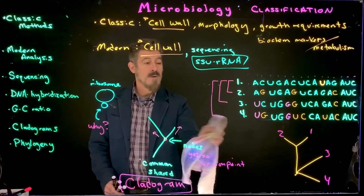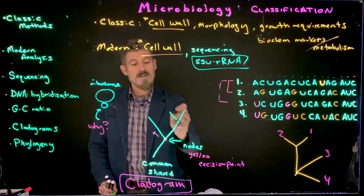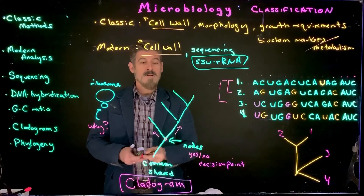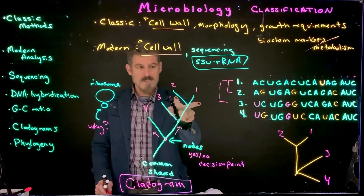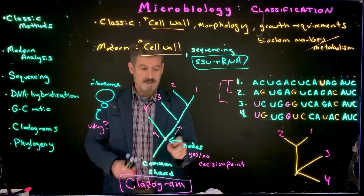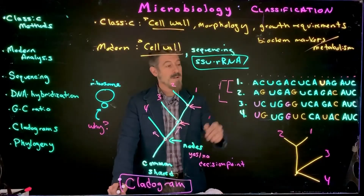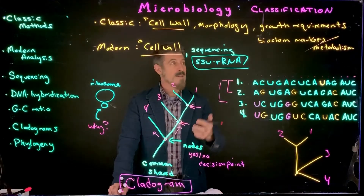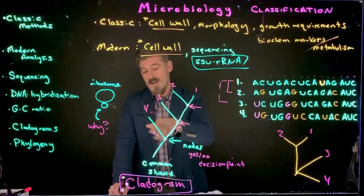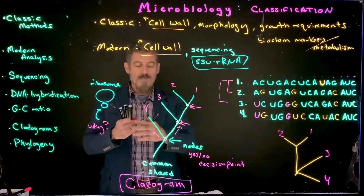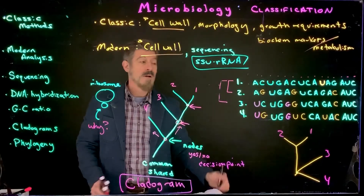Depending on how many organisms or groups you're classifying, you might need to introduce additional nodes, and so you break down your organisms accordingly. This shows you the relationships — who's more closely related, who's more distantly related. This type of analysis can be done based on DNA sequencing, but we can also use it to do all the traditional ones — whether they ferment lactose, their shape (cocci versus bacilli), and so on. You can get a whole variety of different cladograms depending on what characteristics you put into the nodes.